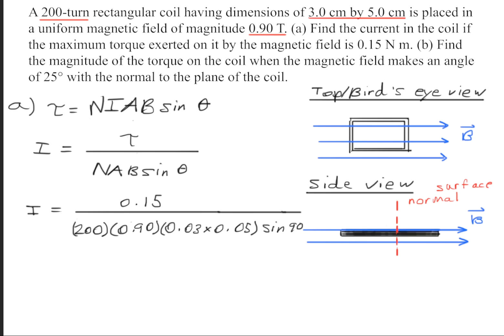Right here we'll begin plugging in the numbers that were given to us. We have a torque of 0.15, the number of turns was 200. The area, remember they gave it to us in centimeters, so we have to turn that into meters to get an area of meters squared. Right here is the magnetic field of 0.90 tesla and the angle between the magnetic field and the surface normal.